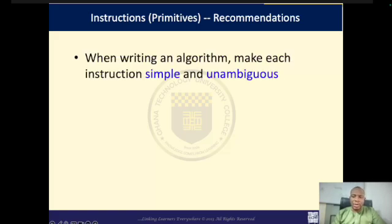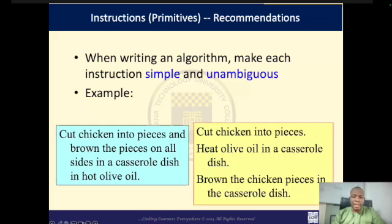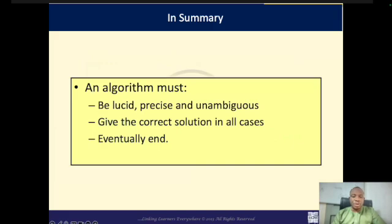What do we mean by simple and unambiguous? For example, if I want somebody to fry some chicken, I could write: 'cut chicken into pieces, brown all pieces on all sides in a casserole dish in hot olive oil.' But this is very long and complex. Instead, break it down into simple, precise instructions: cut chicken into pieces; heat olive oil in casserole dish; brown the chicken pieces in the casserole dish. In summary, your algorithm should be lucid, precise, unambiguous, give the correct solution in all cases, and eventually have an end.